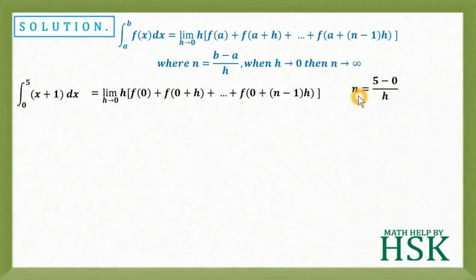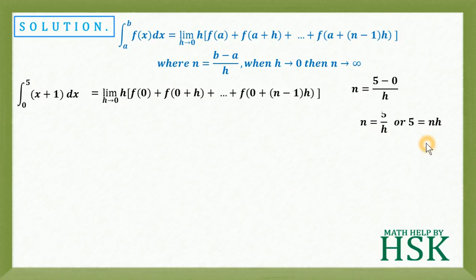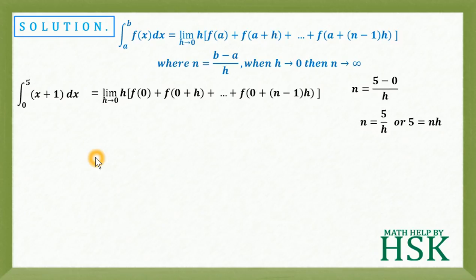Now, n = (b−a)/h = (5−0)/h = 5/h, where b is the upper limit and a is the lower limit. So nh = 5. Also, f(x) = x + 1.